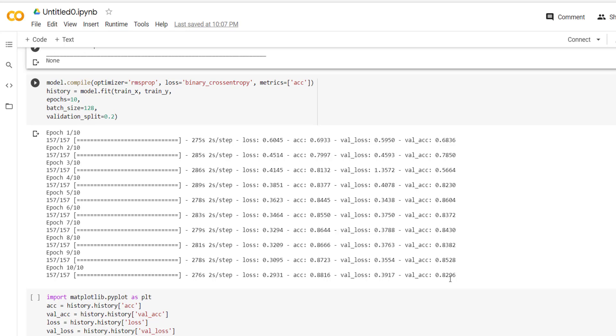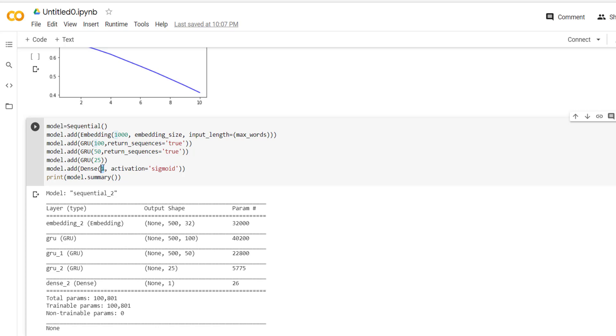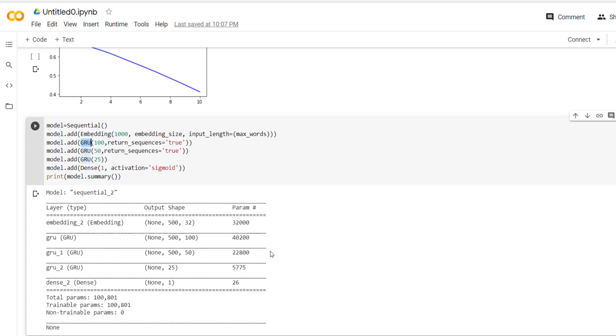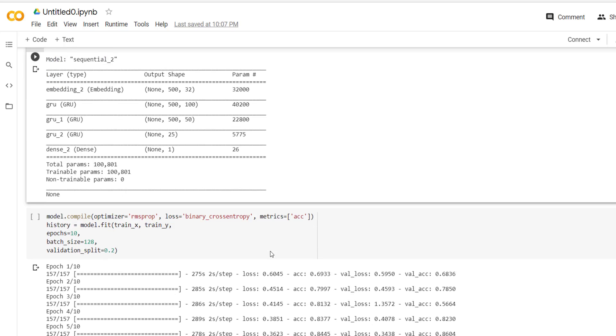We have used same number of layers over here. So where is the change? The change is only in the layer. Instead of using simple RNN we have to use gated recurrent unit layer and we have studied basic theory of gated recurrent unit just now.